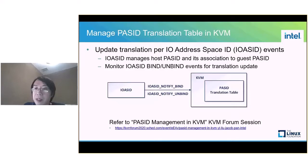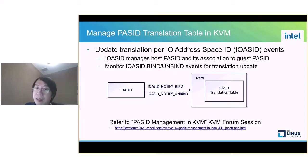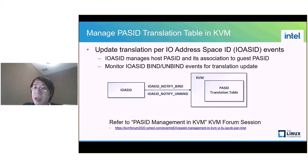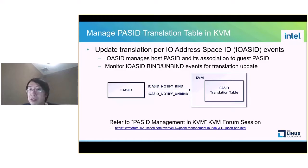KVM is required to manage the PASID translation table for ENQCMD virtualization. KVM needs to update translation per IO address-space ID events. IOASID manages host PASID and its association to guest PASID. It will notify users on the PASID status change. So KVM monitors IOASID bind and unbind events for translation updates. You can find more details in another KVM Forum talk titled 'PASID management in KVM', and here is a link to that session.